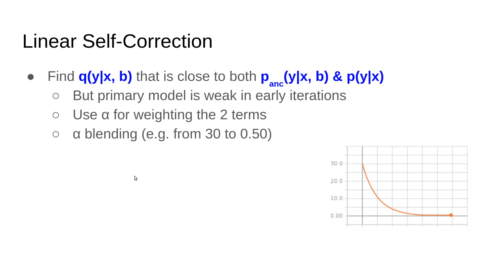In the linear self-correction model, we're seeking to find a new distribution q(y|x,b) that is close to both p_anc(y|x,b) and p(y|x). One issue is that in early model moments, in early iterations in the training of the p distribution, we know the network is producing garbage output, noisy outputs. If we try to combine both of them, it will end up producing very noisy outputs because the early iteration p(y|x) is very noisy.